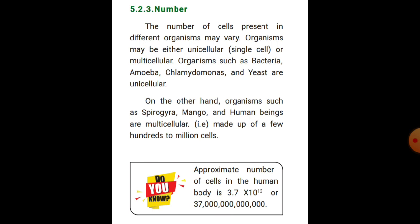Human beings are multicellular organisms made up of a few hundred million cells. The approximate number of cells in the human body is 3.7 × 10 to the power of 13, which means 37 followed by 12 zeros.